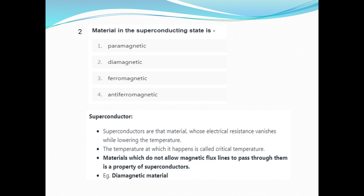What is the material in a superconducting state? The answer is option B — diamagnetic. Superconductors are materials whose electrical resistance vanishes when the temperature is lowered. That critical temperature is important. Superconductors do not allow magnetic flux lines to pass through them — magnetic flux lines cannot pass through them.